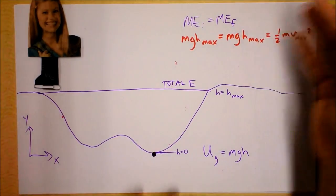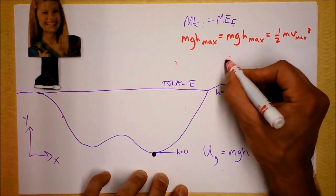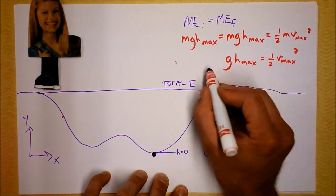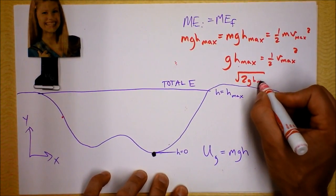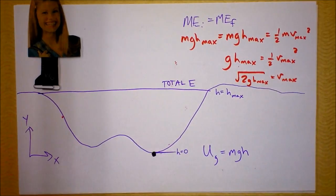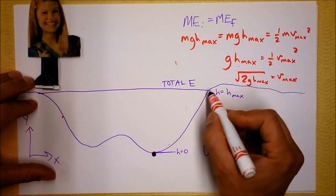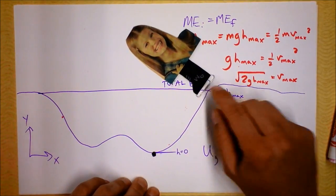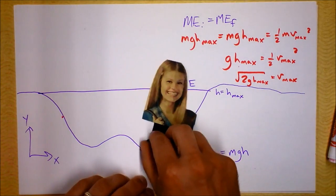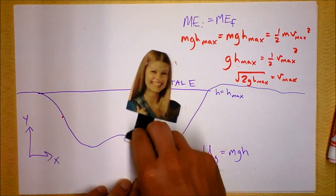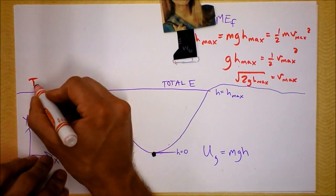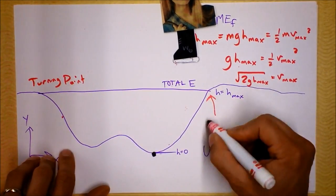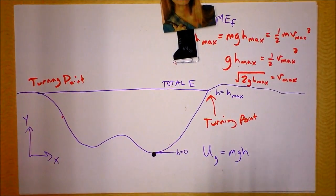We can identify MgH-max as equal to one-half M V-max squared, and we could find V-max. We can cancel out the M's and state that g times H-max equals one-half V-max squared, so the fastest she's ever going is the square root of 2gH-max — that is her maximum speed. With no friction, the point where all of her energy turns into potential is where she will turn around each time, and we call that point a turning point.